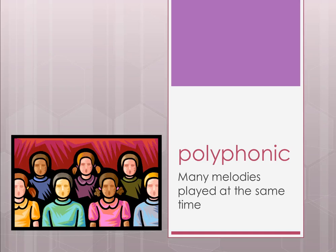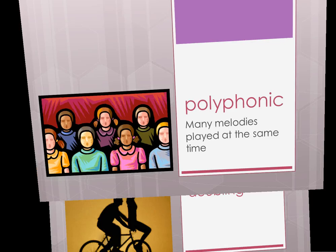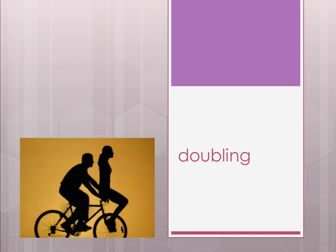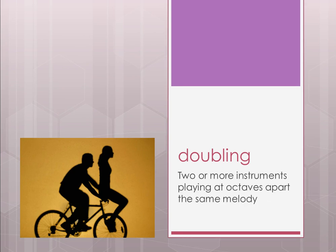Doubling — shown by two people on a bike — is when two instruments play the same melody at octaves apart. For example, an alto saxophone and a baritone saxophone could play the same part an octave apart. That's what doubling is.